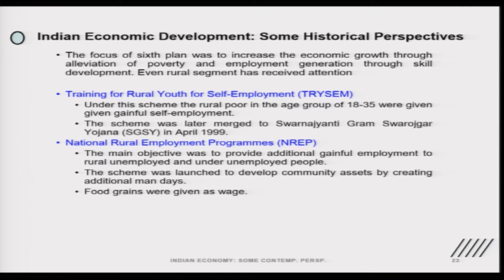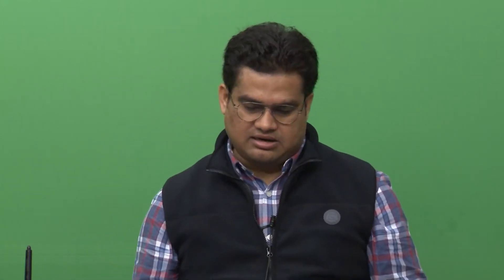Then there was the National Rural Employment Programme (NREP), under which additional hours of work were created and the rural population was engaged for capital asset creation. This was designed to give employment to rural youth and those unemployed at the village level. Wages were paid in the form of food grain distribution. This was a significant initiative in rural areas; in some states it did good work, and it was later converted into 'Food for Work' and then became part of JRY.